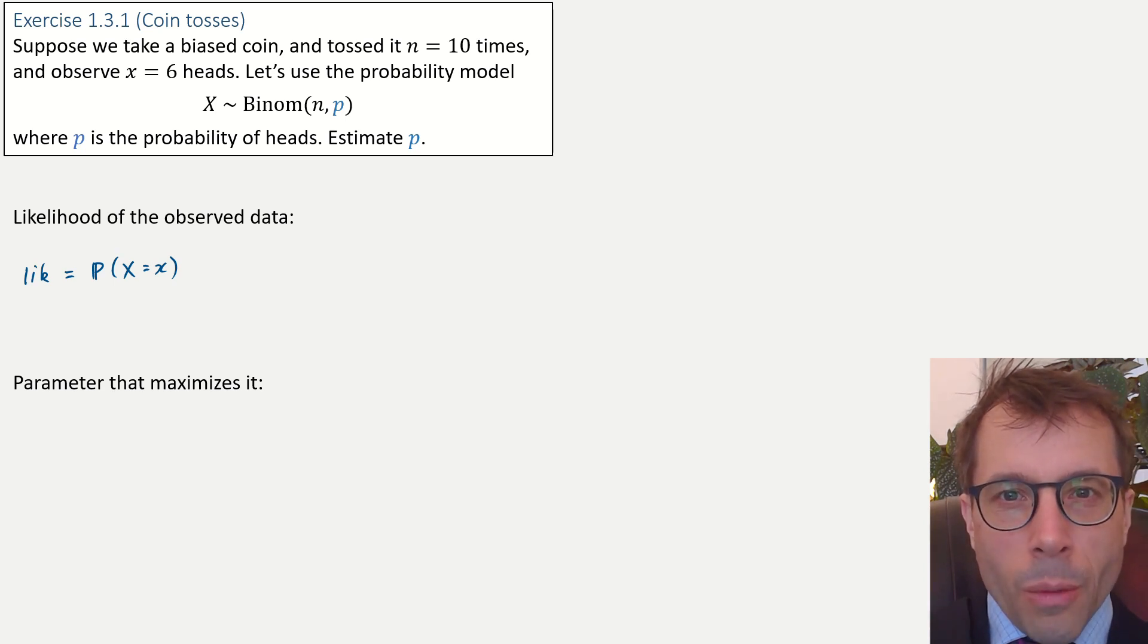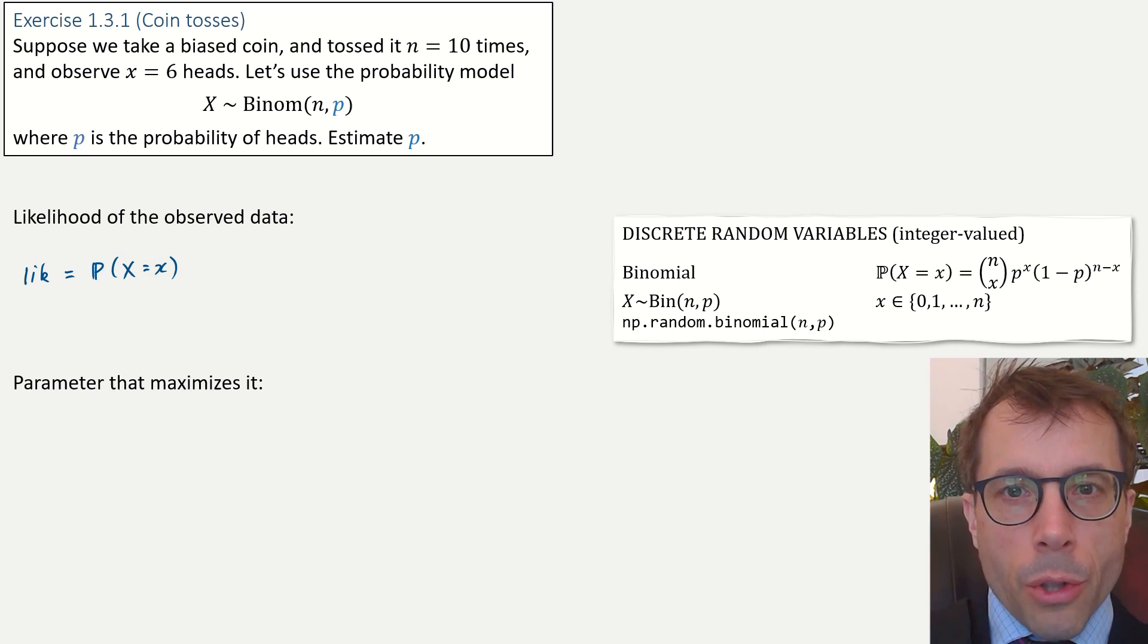So, what is this? Well, looking back at the question, it tells us what distribution to use for X. It tells us to use the binomial. So, look up our reference table of probability distributions, section 1.2 in the printed notes, and copy out the probability mass function. Okay, that's the likelihood.